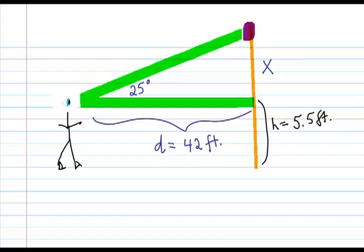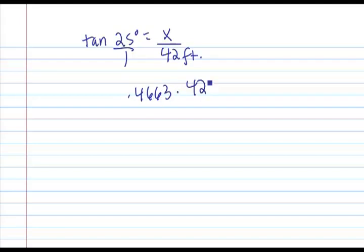Now if you're trying to find the height above ground of that purple object, then this is the math that you need to do. The tan of 25 degrees is equal to x over 42 feet. Obviously cross multiplying gets the x by itself. The tan of 25 degrees, 0.4663 times 42 should give you x. You get x equals 19.6.